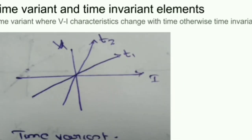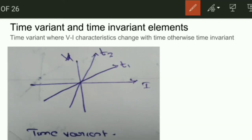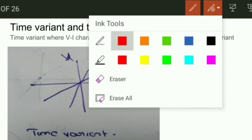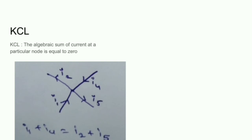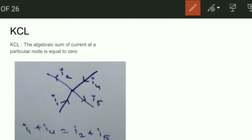For time-variant and time-invariant elements: a time-variant element is one whose VA characteristics change with respect to time; otherwise it is time-invariant. At time t1, if the VA characteristics change as time changes, the element is time-variant. At time t2, if the VA characteristics do not change, it is time-invariant.